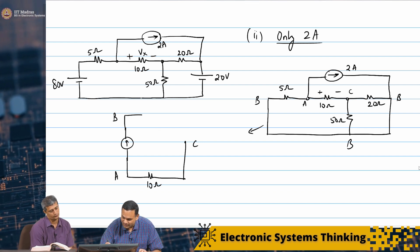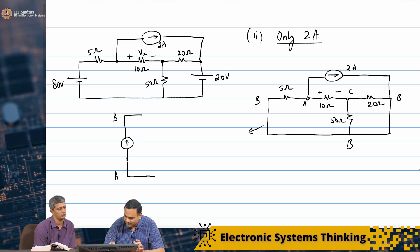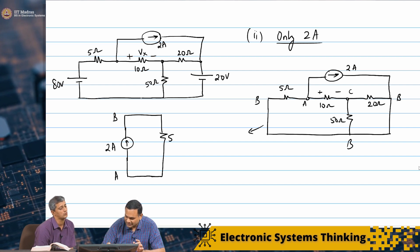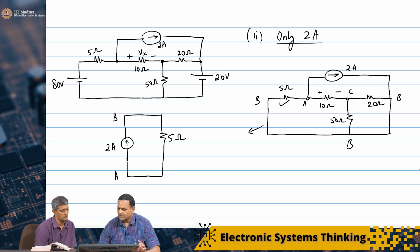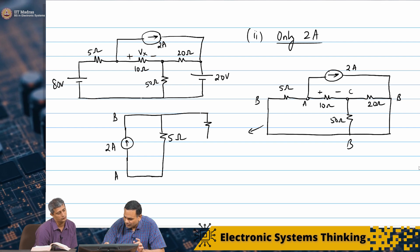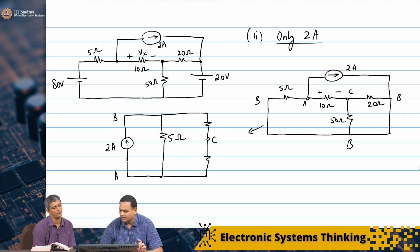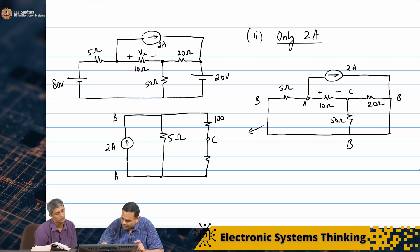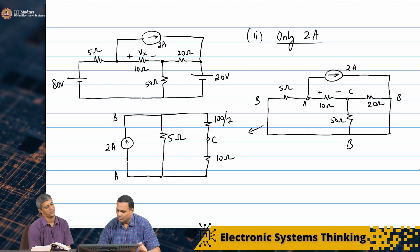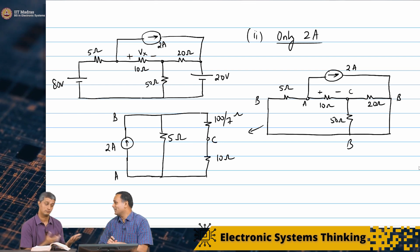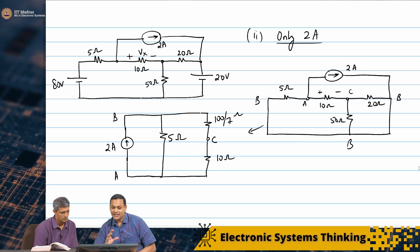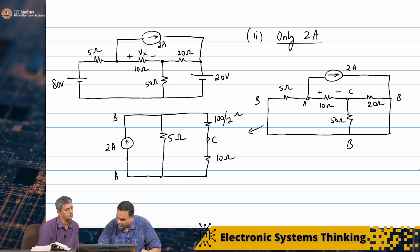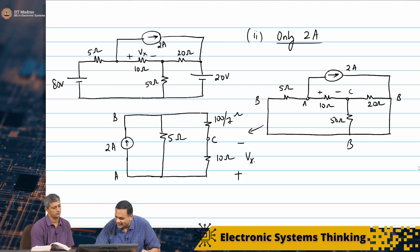Let me draw it a little bit better. Between A and B, I have 5 ohms with the 2 ampere source. Between B and C, I have 100 by 7 (which is 20 ohms in parallel), and here I have the 10 ohm resistance. Redrawing a couple of times helped us. Now I need VAC — I will call that VX2.